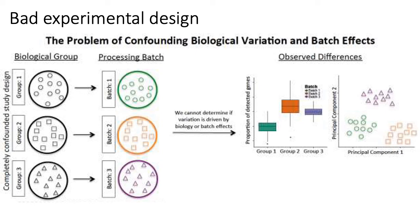If you were to do this, your batch would be perfectly confounded with the group of samples you're trying to sequence. Any differences you detect between group one and group two could either be due to real biological differences between the two groups of samples, or they could be due to the fact that there are just differences between batch one and batch two. Because batch is confounded with group, you can't tell what differences are due to batch or what differences are due to group.